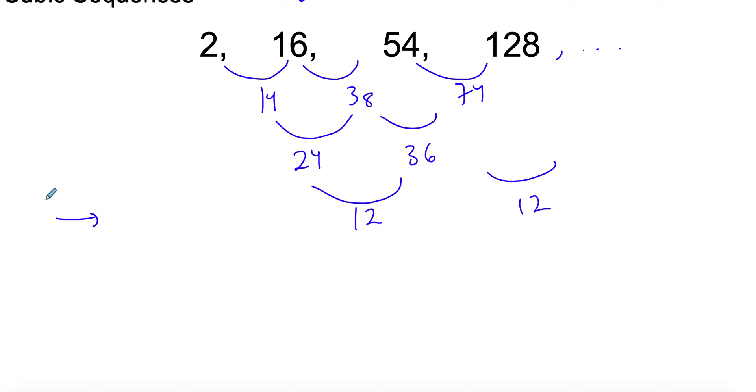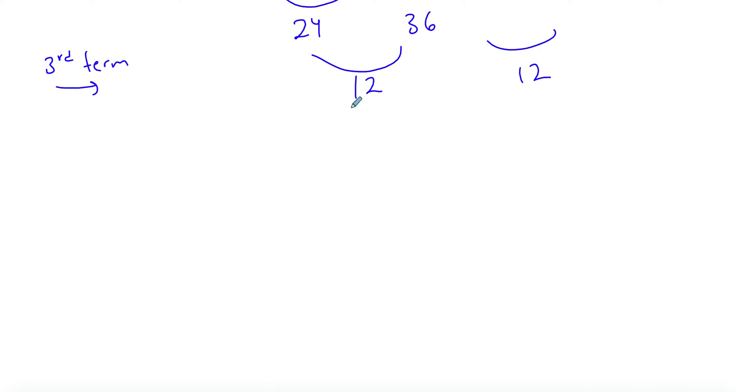We get a constant third term, and what you do with this term, unlike the quadratic sequence where we divided by two, for cubic sequences you divide by six. In this whole video I'm not going to go through the technicalities of why, so it's kind of just blindly follow through for now.